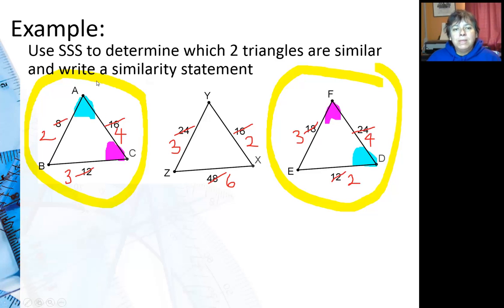So if I'm doing my similarity statement, if I go A, B, C, then that's blue, clear, red. That should go with blue, clear, red, D, E, F. And that's my similarity statement.